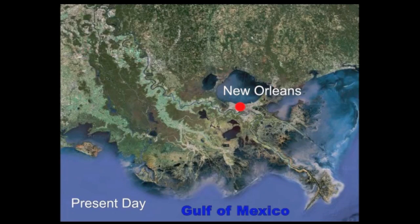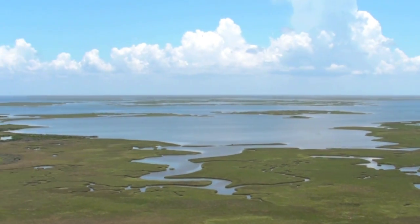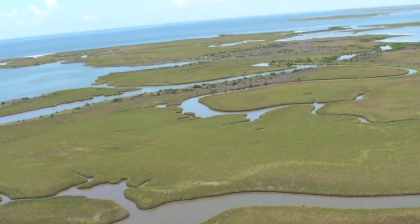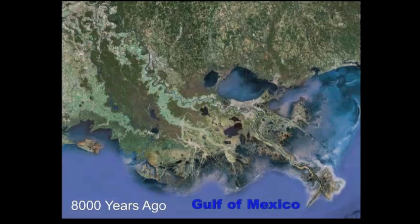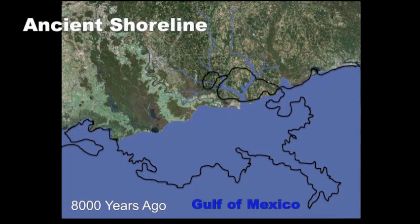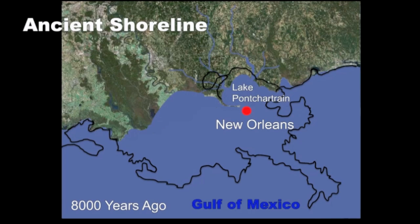The Louisiana coast is a dynamic system built in part by the action of the Mississippi River. To understand how subsidence affects the Mississippi River Delta and its wetlands, we first have to go back a few thousand years. Because glaciers were melting 8,000 years ago, sea levels were higher at that time, so much of the present-day coast was underwater. Where New Orleans is located today was also under the sea. Sea level continued rising, forming a bay that would ultimately become Lake Pontchartrain.